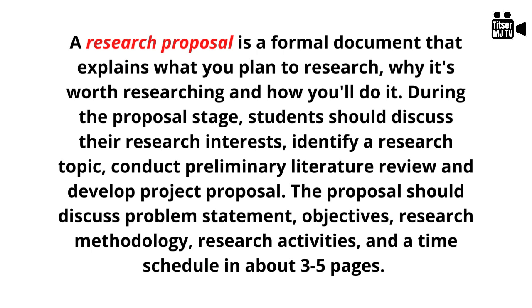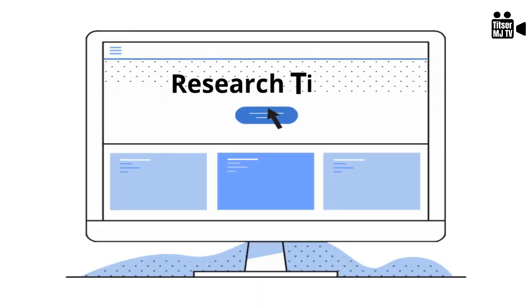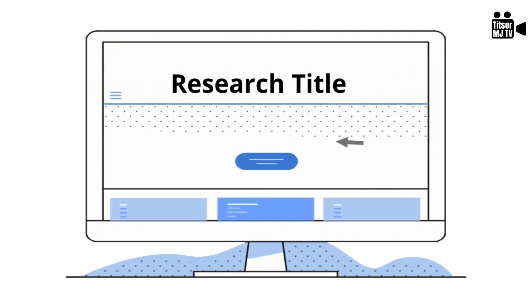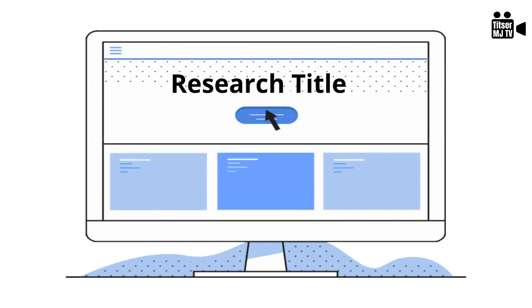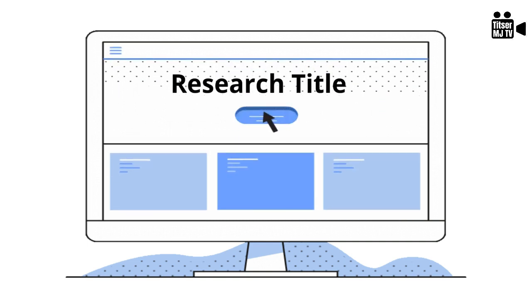Let's discuss the different parts of a research proposal and how to do it step by step. First, you must have a very good title. Provide a brief and meaningful title to your project — this is the backbone of your research study.